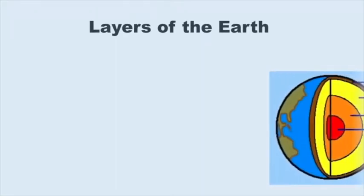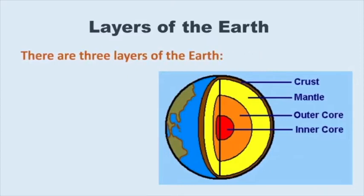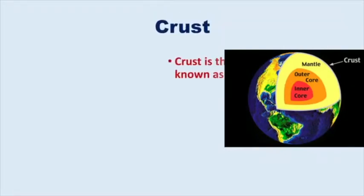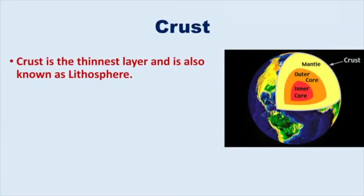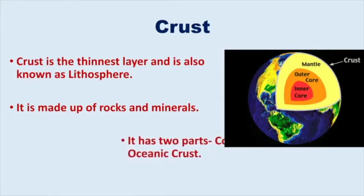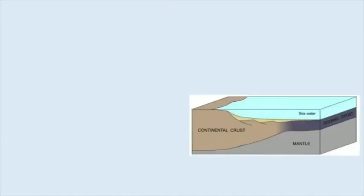Layers of the Earth. There are three layers of the earth: the crust, the mantle and the core. The uppermost layer is the crust, also known as the lithosphere. It is the thinnest layer and is made up of topsoil and rocks which contain minerals. Children, do you remember that in the previous chapter I told you about two parts of the lithosphere? It has continental crust and oceanic crust. Let's talk about these two in detail.